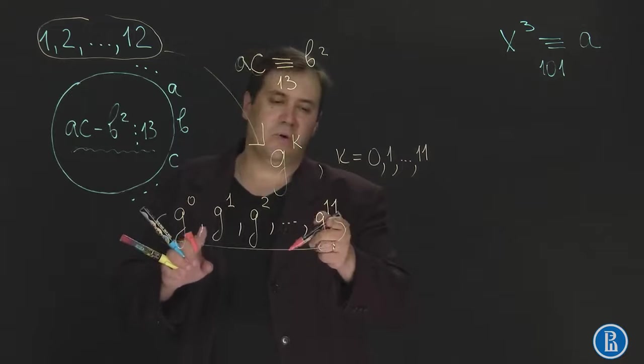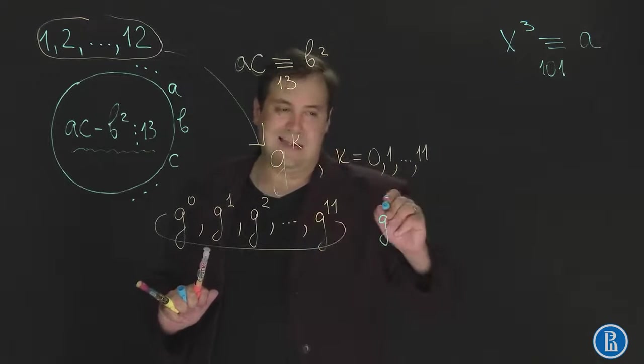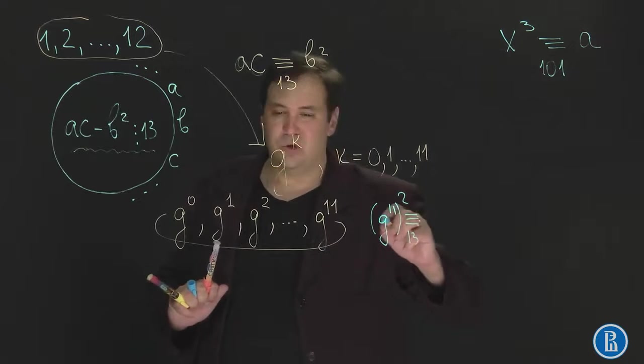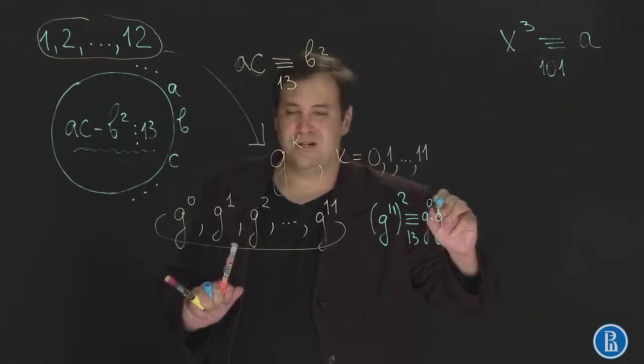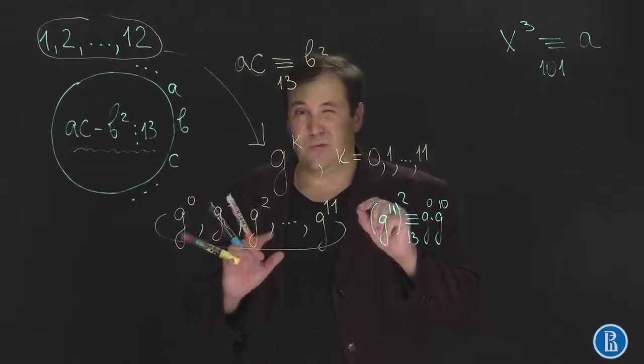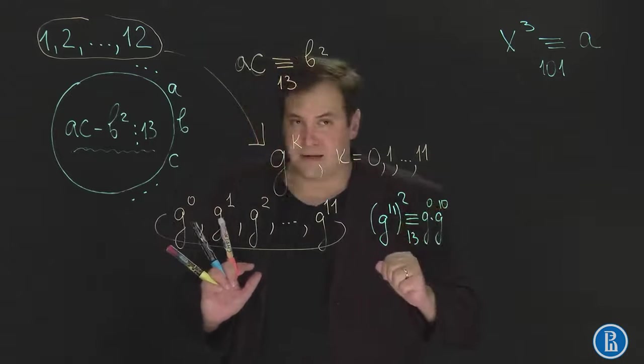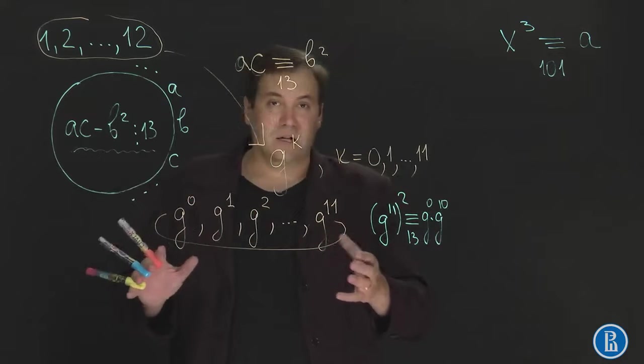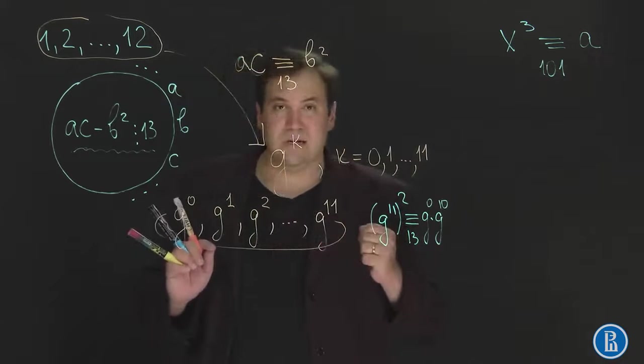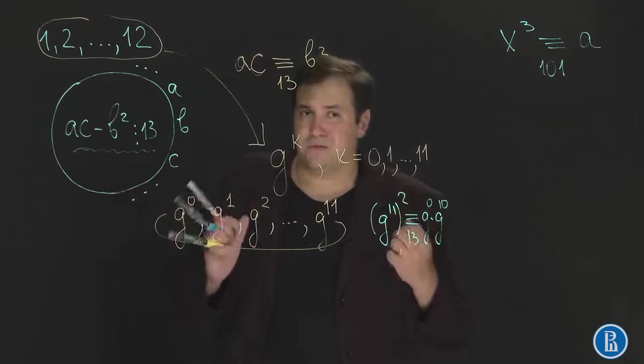Let's just check this. g to the power of 11 squared, will it be congruent modulo 13 to g to the power 0 multiplied by g to the power 10? Well g to the power 22 is the same as g to the power 22 minus 12. 22 minus 12 is 10 and this is exactly what we have on the right hand side. So it's a circular geometric progression and now all we need to do is find the primitive root modulo 13 and raise it to all the powers consequently and write the obtained remainders modulo 13 in a circle.